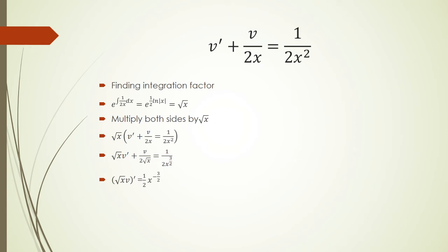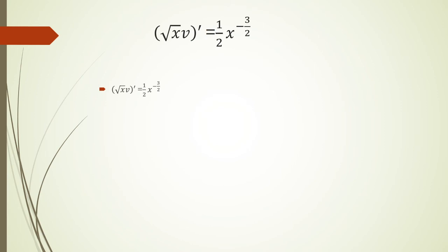And notice that on the left side, that's just the product rule for root x times v. So at this step, we're going to integrate both sides. So integrating the derivative will cancel it, and then integrating on the right using the power rule.